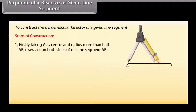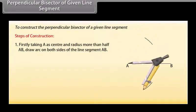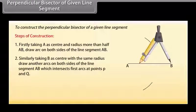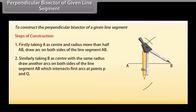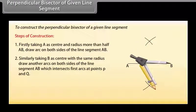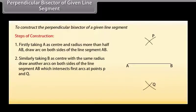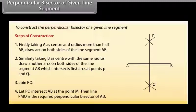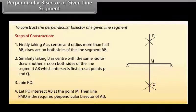Firstly, taking A as center and radius more than half AB, draw arcs on both sides of the line segment AB. Similarly, taking B as center and with the same radius, draw another arc on both sides of the line segment AB, which intersects the first arcs at points P and Q. Now join P and Q. Let PQ intersect AB at point M. Then line PMQ is the required perpendicular bisector of AB.